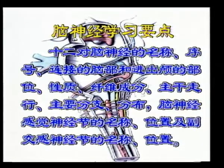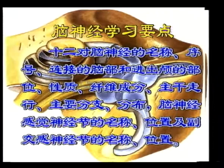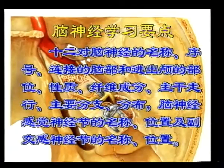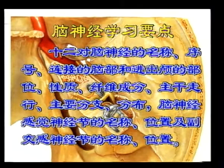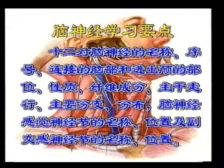脑神经学习要点：十二对脑神经的名称、序号、连接的脑部和进出颅的部位、性质、纤维成分、主干走行、主要分支及分布；脑神经感觉神经节的名称和位置；以及副交感神经节的名称、位置。